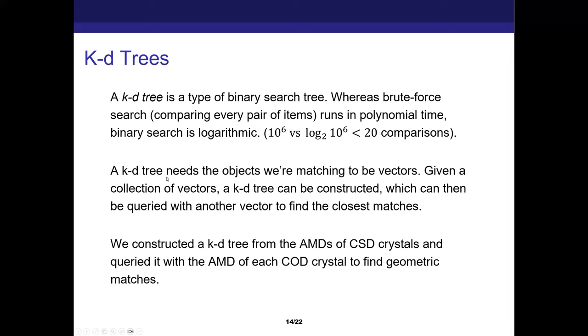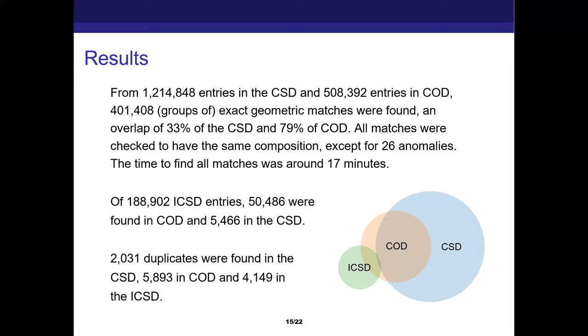It's also important that our invariance are vectors and not other complicated descriptors like a graph, because KD trees work on n-dimensional space and need the inputs to be vectors. So what we did was calculate the AMDs for all CSD crystals and all COD crystals. We made a KD tree from the CSD, and then we searched for each COD crystal in it. And this is what we found. About 1.2 million CSD entries and half a million COD entries. And we found an overlap of over 400,000 matches.